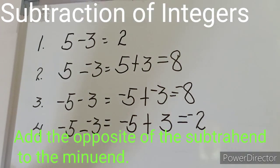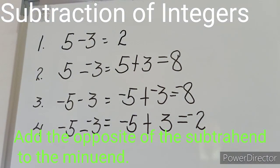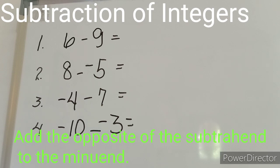So if you were to formulate a rule for subtracting integers, what should it be? I hope it's similar to this: when you are going to subtract integers, the thing we are doing is simply to add the opposite of the subtrahend to the minuend.